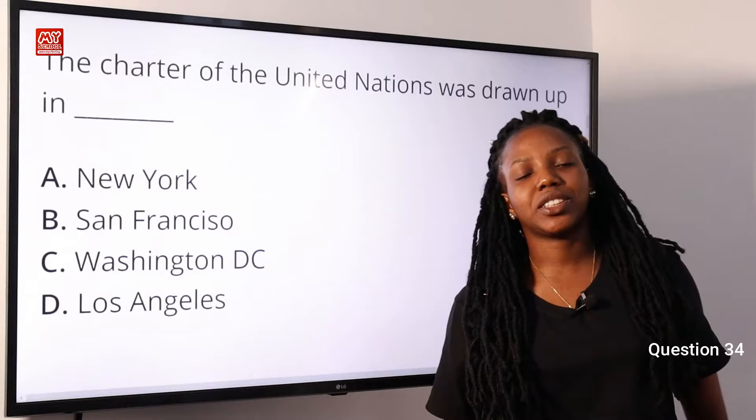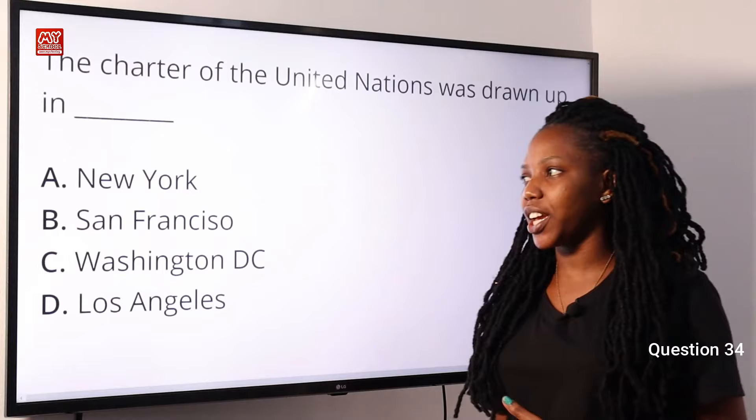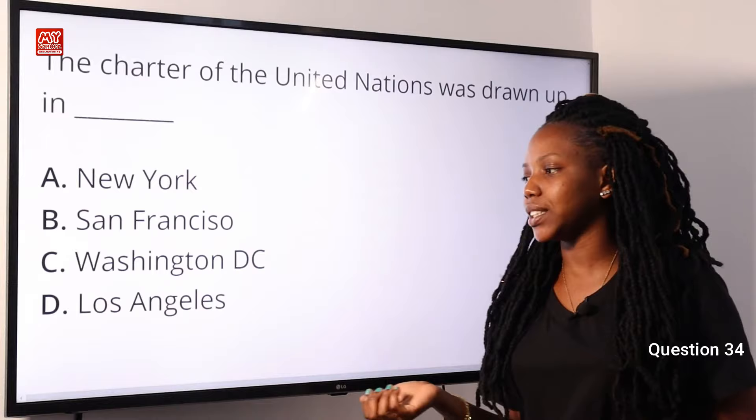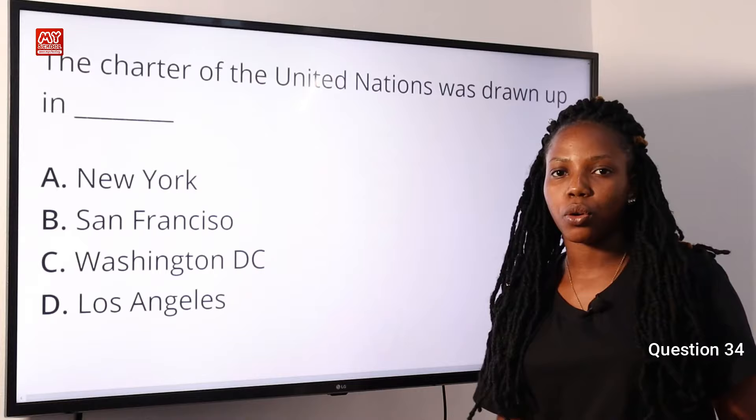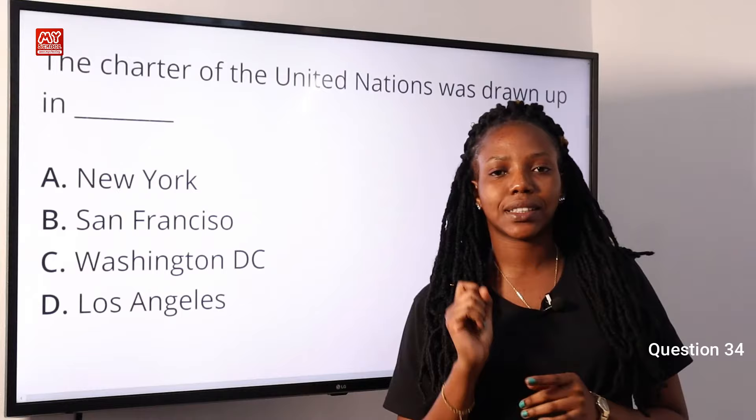Question 34. The Charter of the United Nations was drawn up in dash. A, New York. B, San Francisco. C, Washington D.C. D, Los Angeles. The answer is B, San Francisco. The Charter of the United Nations was drawn up in San Francisco on the 26th of June 1945. Option B is the correct answer.